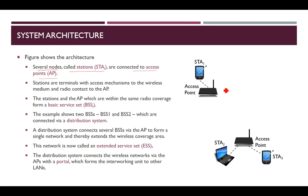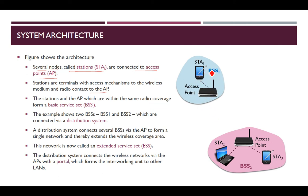A station is a terminal with access mechanisms to the wireless medium, and it uses radio to connect to the AP. The stations and the AP within the same radio coverage area form a BSS — that is called a Basic Service Set. As shown in the figure, the first group forms BSS1, and the three devices under the other radio frequency range form BSS2.